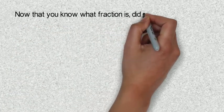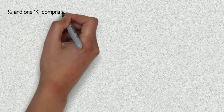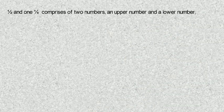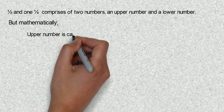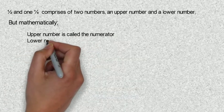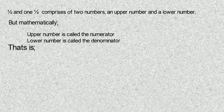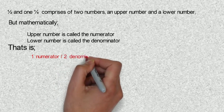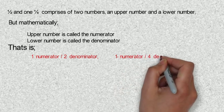Now that you know what a fraction is, did you notice anything? Can you see one over two and one over four comprises of two numbers, an upper number and a lower number? But mathematically, the upper number is called the numerator and the lower number is called the denominator. That is, one which is the numerator divided by the two which is the denominator. Also, if you check one over four, the one is the numerator and the four is the denominator.